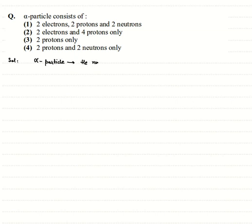Since they are only nuclei, they don't have any electrons. Helium nuclei have two protons and two neutrons, so the mass number A is 4 and the atomic number Z is 2. Therefore, they have two protons and two neutrons only, and the correct answer to this question would be option 4.